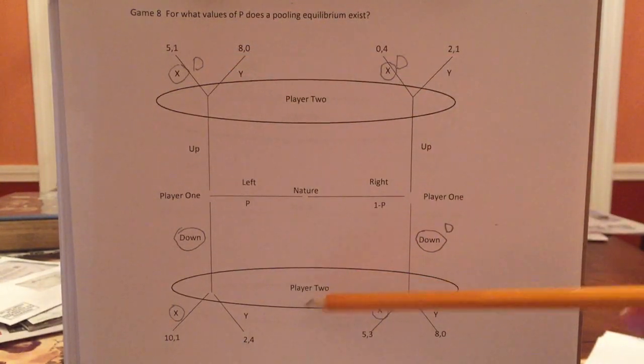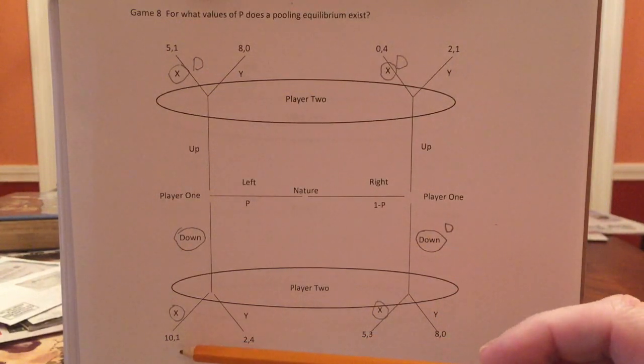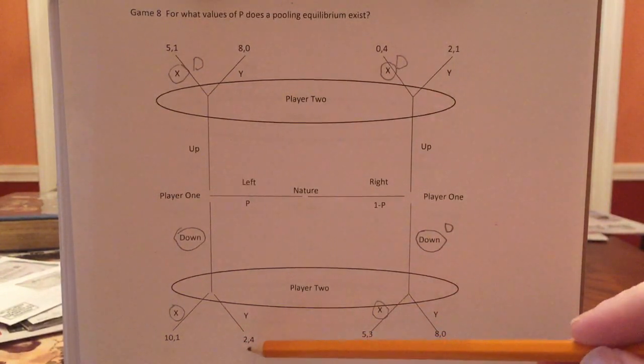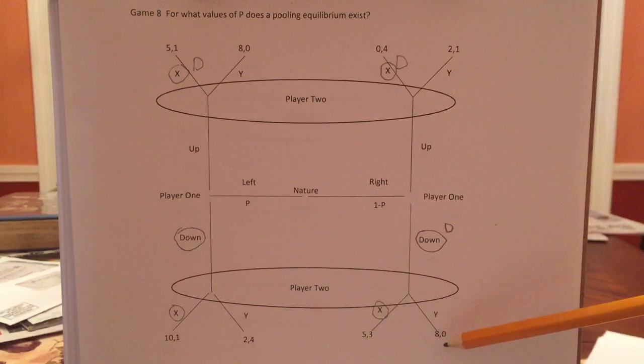Player two, if down is played, well, you're going to get X will give you one or three and Y will give you four or zero. So which is better? We want X to be better, but of course that's going to depend on P.